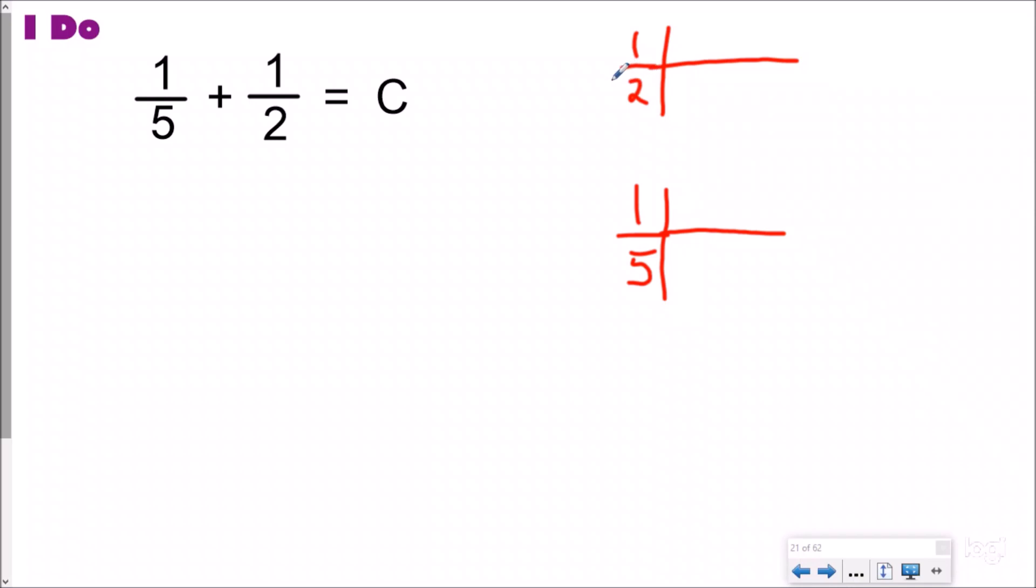So what I'm gonna have to do is I have to do my pattern method for both of these. Now if you did not watch our prerequisite video, basically all I'm doing is using repeated addition to help me find these fractions. So I'm gonna skip count by two, two, four, six,